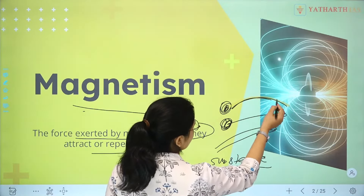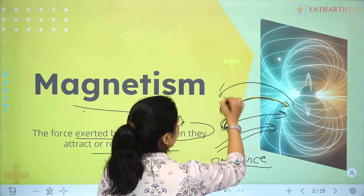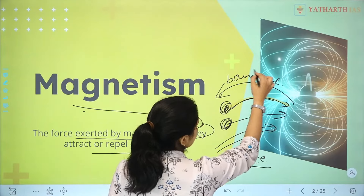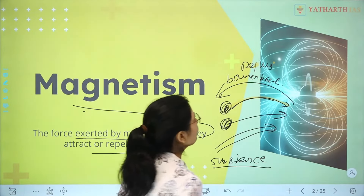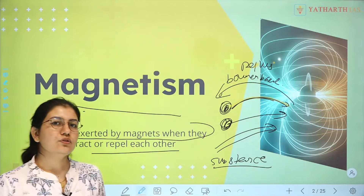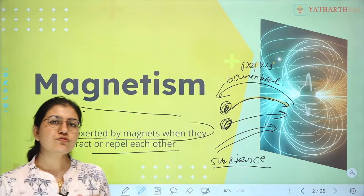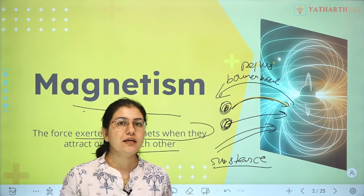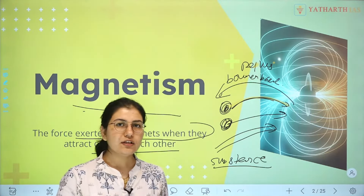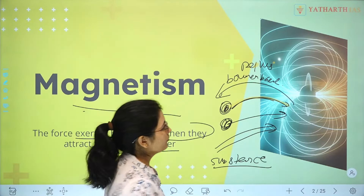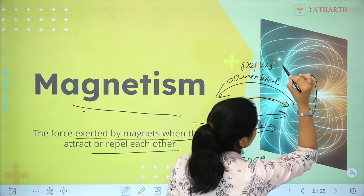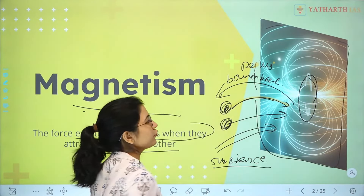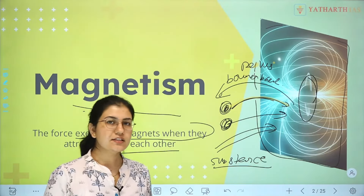The magnetic field is the area around a magnet. For example, consider a magnet — the area around it can feel the presence of that magnet. A substance placed in this field will experience the force of magnetism.